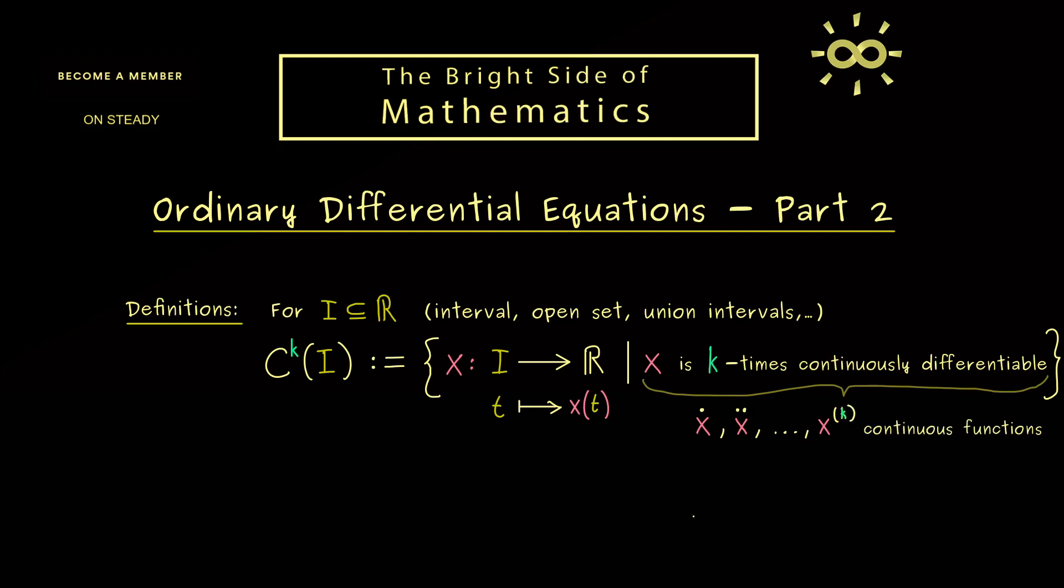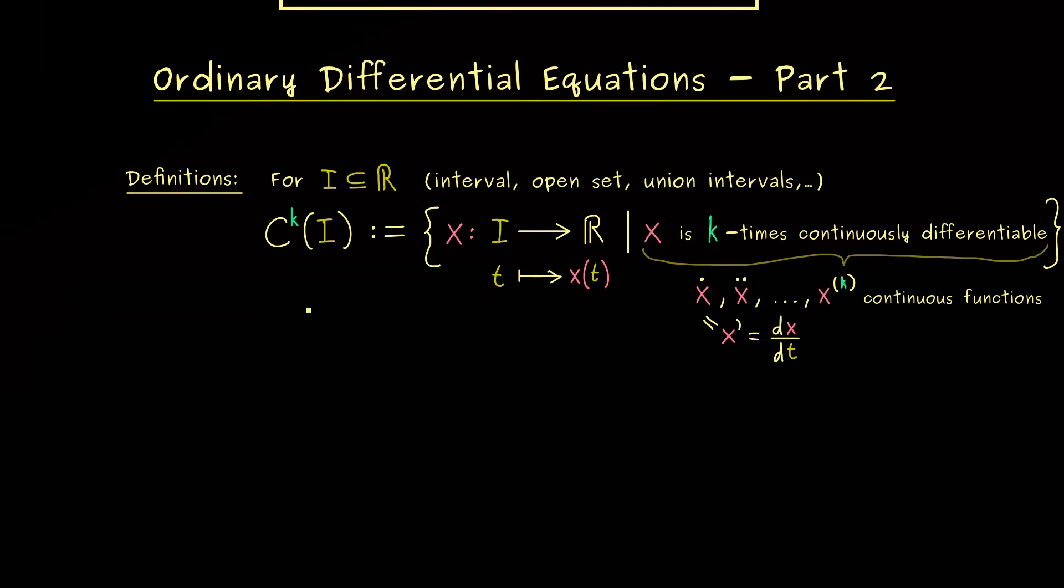Of course in situations where the dot can be confusing we will just use other notations. For example, you know the common prime notation or the Leibniz notation. So please keep that in mind, depending on the context or depending which book you read you will see different notations for the derivative. However, the definition for an ordinary differential equation should be the same.